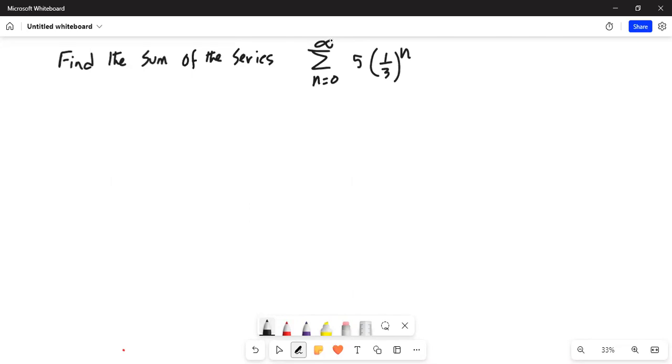So, that is infinity and it is 5 times 1 third to the power of n from n equal to 0 to n equal to infinite. Okay. So, let us do the solution.